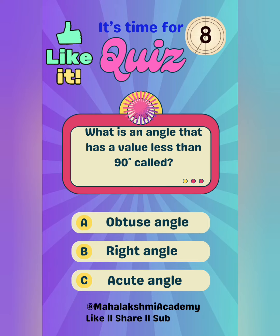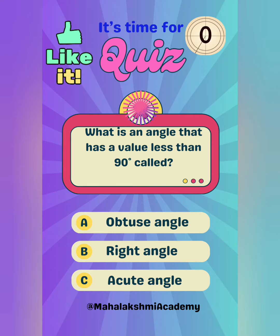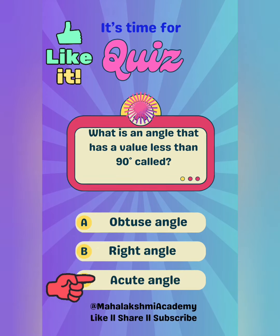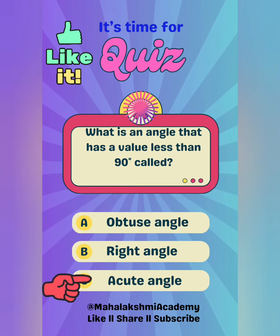What is an angle that has a value less than 90 degrees? Options: Obtuse angle, Right angle, or Acute angle? And the answer is Acute angle.